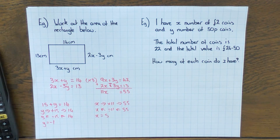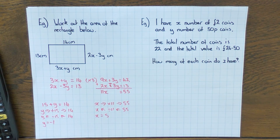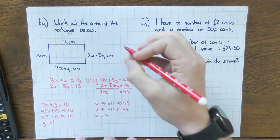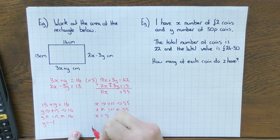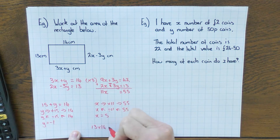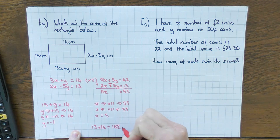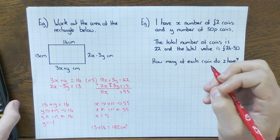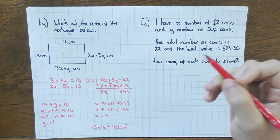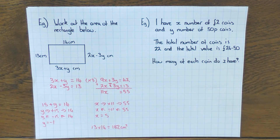Just to answer the question fully: 13 times 14 equals 182 cm². Always read the question — make sure you haven't missed a final step like calculating a perimeter or area.